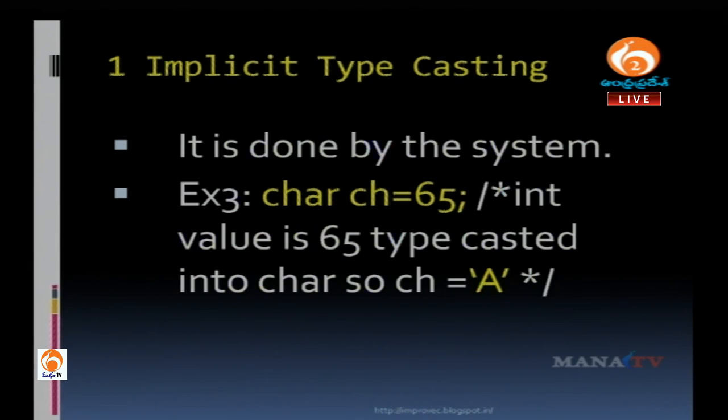B corresponds to ASCII value 66, C corresponds to 67. ASCII characters are available up to 256 in C programming.